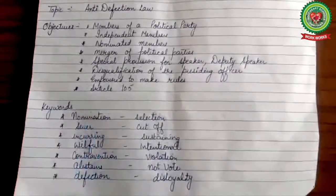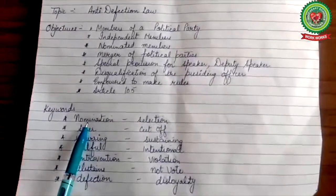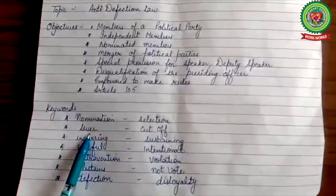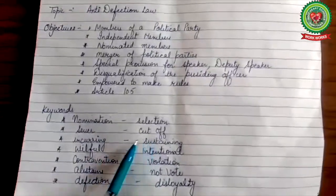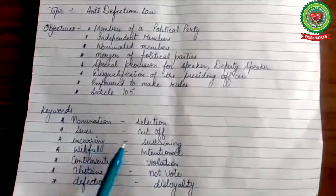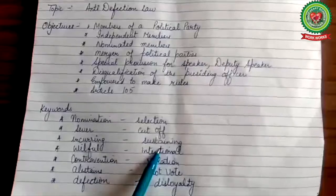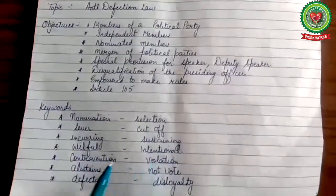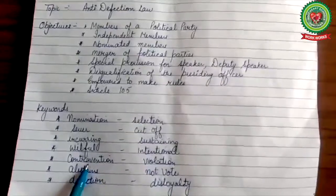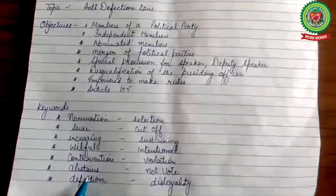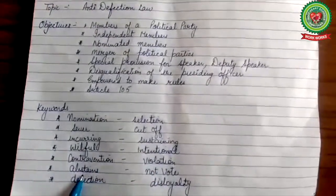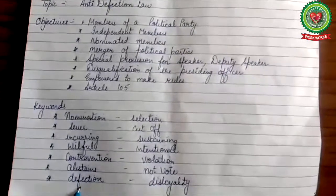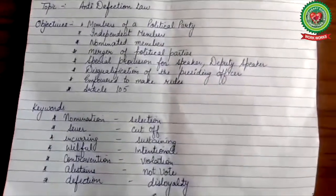Now let's discuss some keywords. Number 1: nomination — it means selection. Number 2: sever — it means cut off. Number 3: incurring — it means sustaining. Number 4: willful — it means intentional. Number 5: contravention — it means violation. Next: abstains — it means not vote. Last word: defection — it means disloyalty.